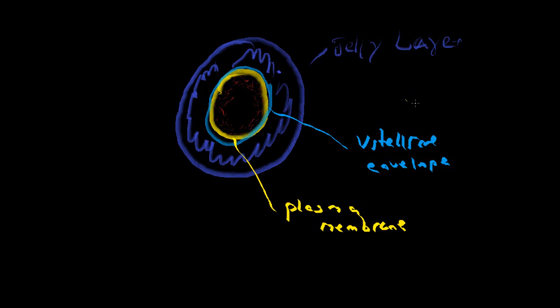Polyspermy is the fertilization with more than one sperm, which would cause birth defects, which is not preferable. The vitellin envelope plays a more active role in preventing polyspermy. There are two main defenses the egg has against polyspermy. The first one is called depolarization, and the next is called the slow block. Let's go over depolarization. It's very simple.